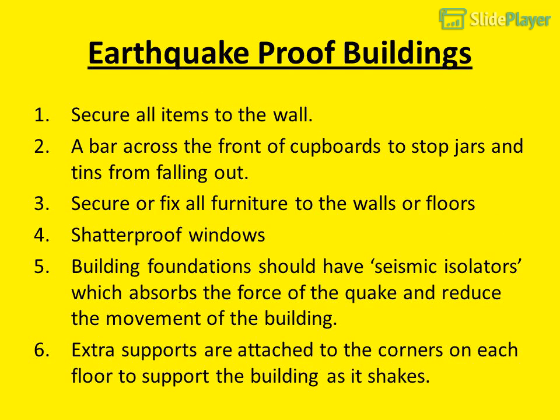Earthquake-proof buildings use several measures: secure all items to the wall with a bar across the front of cupboards to stop drawers and tins from falling out; fix all furniture to walls or floors; install shatterproof windows. Building foundations should have seismic isolators to absorb the force of the quake and reduce movement. Extra supports are attached to the corners on each floor to support the building as it shakes.